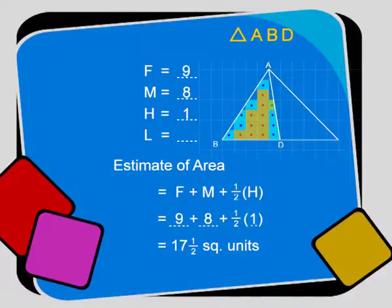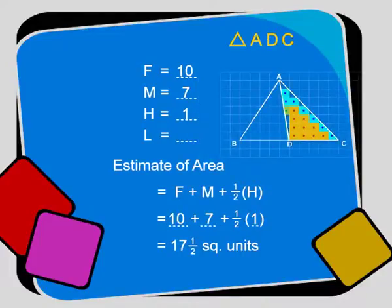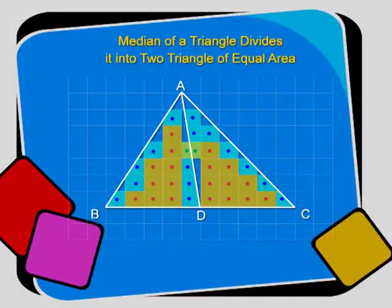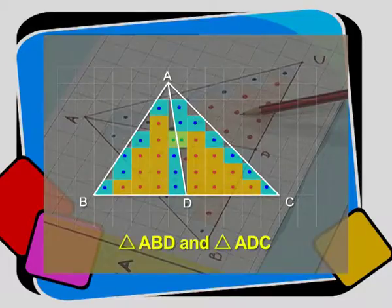The estimate of the area of triangle ABD is equal to 17 and a half square units, and the estimate of the area of triangle ADC also comes out to be 17 and a half square units. What do you observe? We have verified that a median of a triangle divides it into two triangles of equal area. Now children, I have a query for you — can you calculate the area of these two triangles by a mathematical formula? Think about it. Thank you.